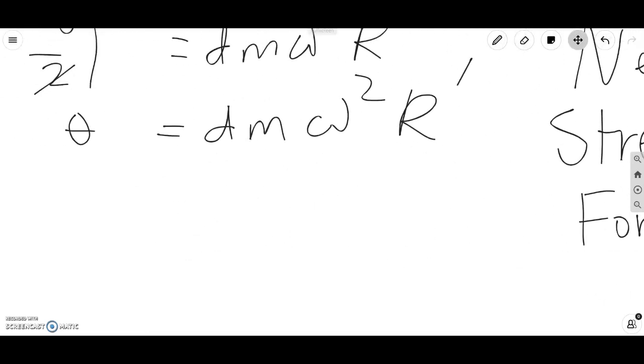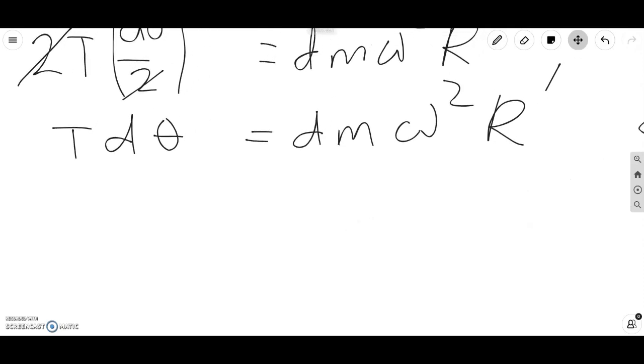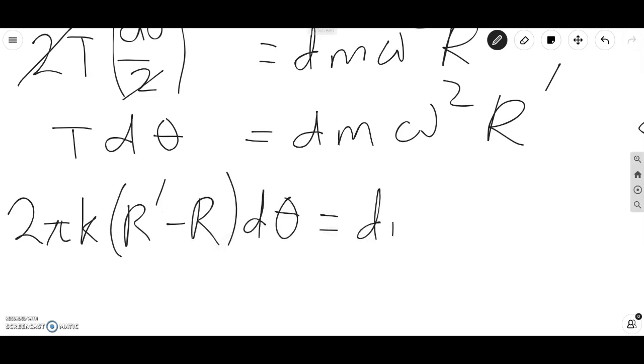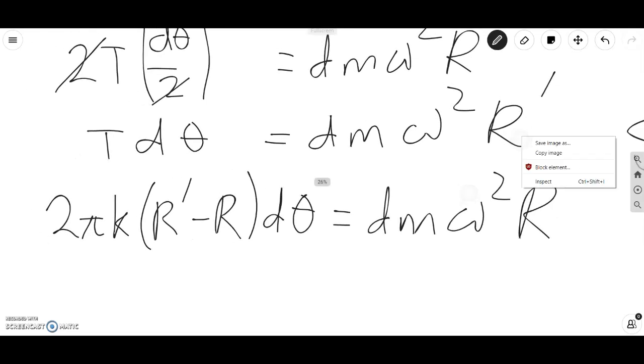Now we go back to Newton's laws. We go back to simplifying this equation. So now we can rewrite T as 2 pi K R prime minus R d theta equals dm omega squared R prime. So now we have pretty much collapsed the equation into the variables that we want, except for this dm and this d theta. And all we have to do is simply integrate this around the whole rubber band.